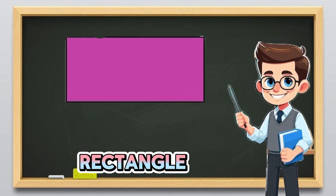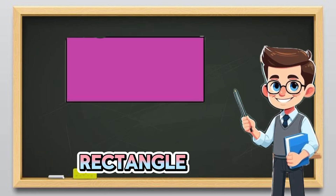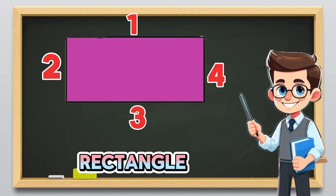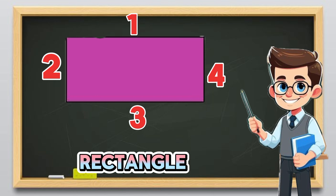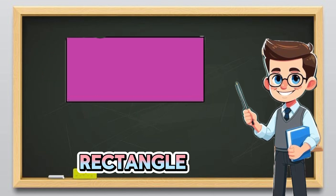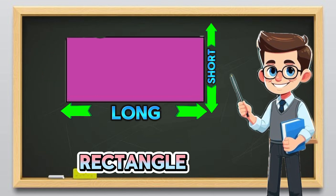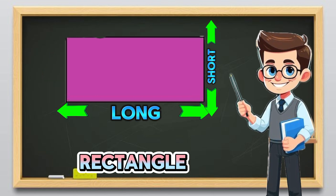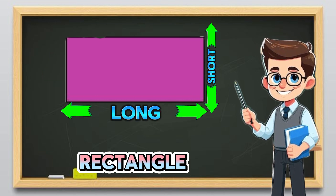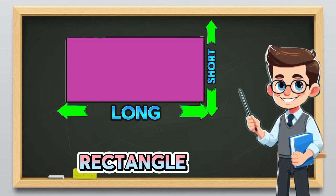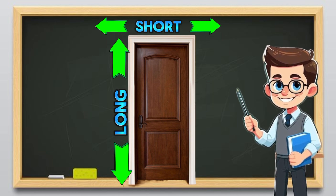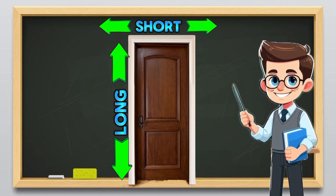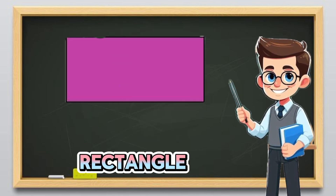Four. Rectangle. A rectangle has four sides, but two sides are long and two sides are short, like a door. Say: long side, short side, rectangle.